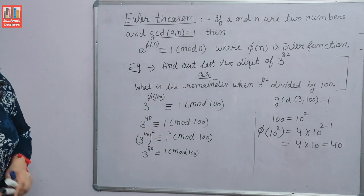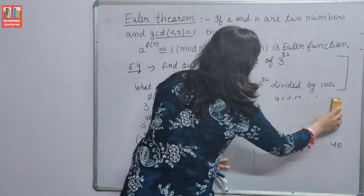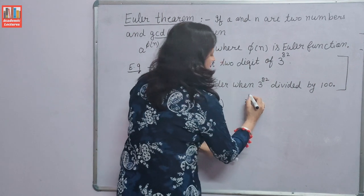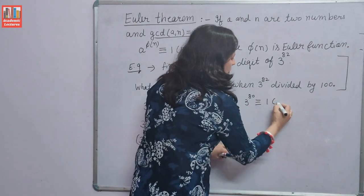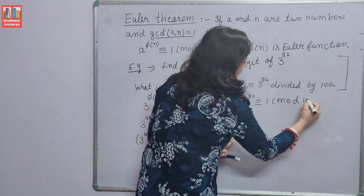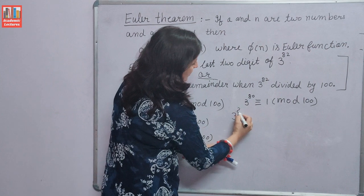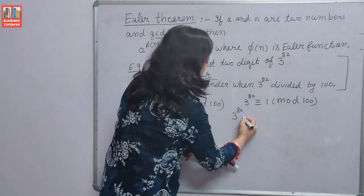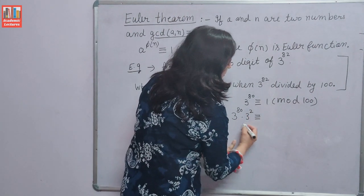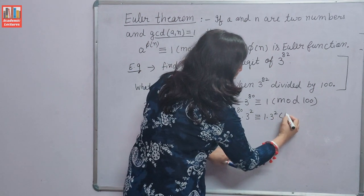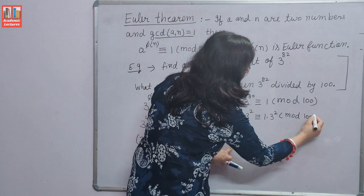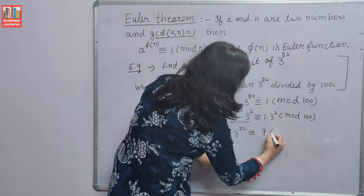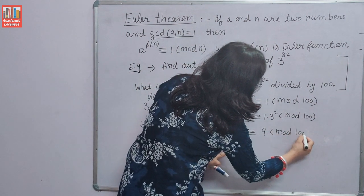But we need 3 raised to the power 82. We found 3 raised to the power 80 is congruent to 1 modulo 100. If we multiply both sides by 3 squared, we get 3 raised to the power 82 is congruent to 9 modulo 100. So the answer is 9.